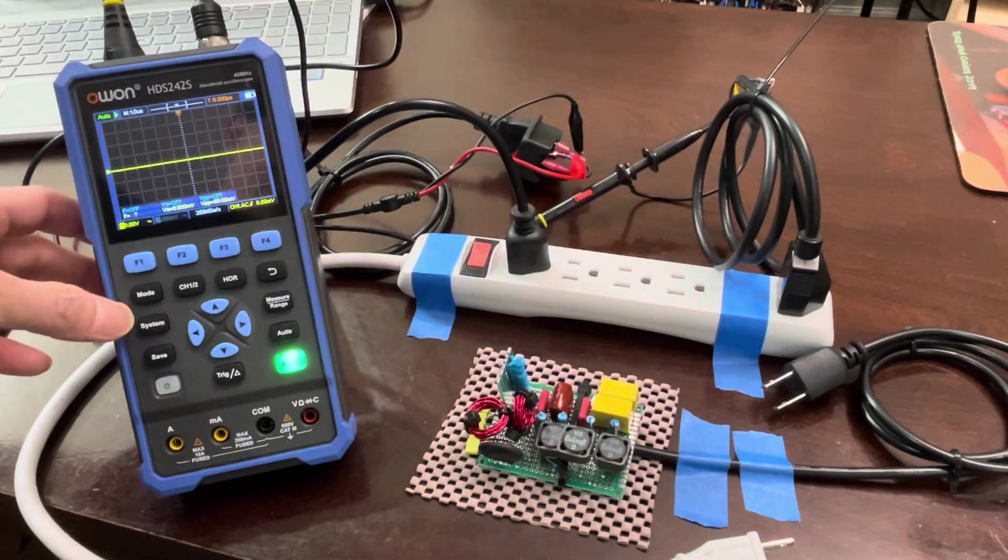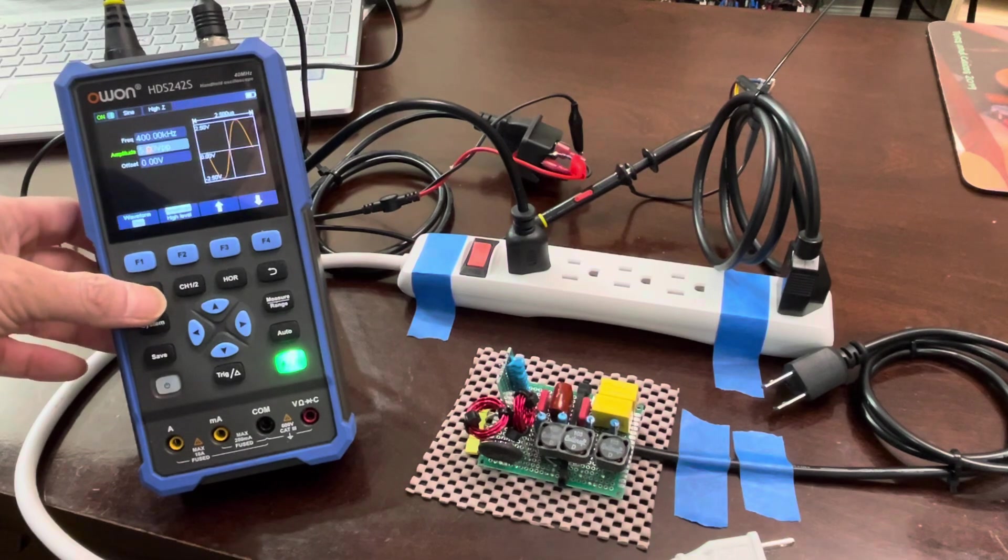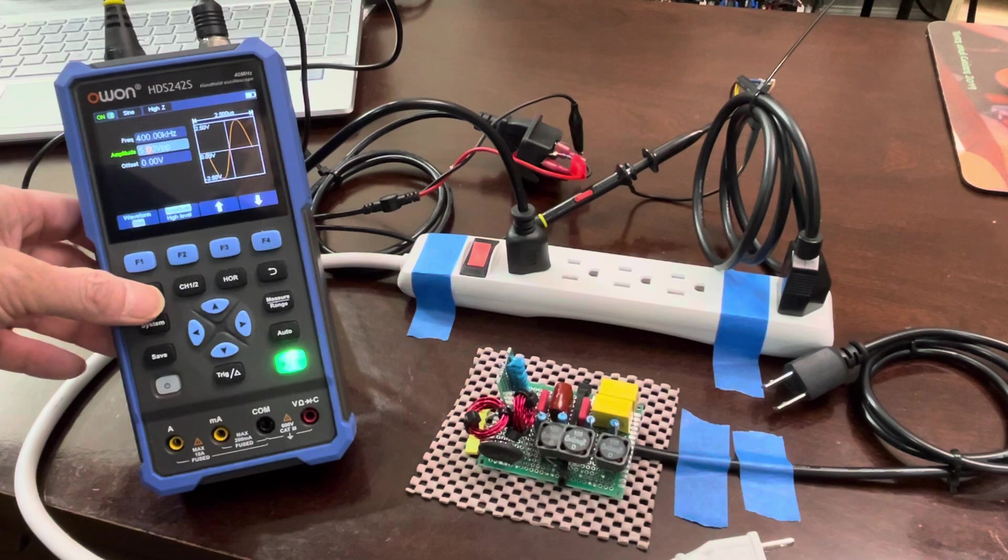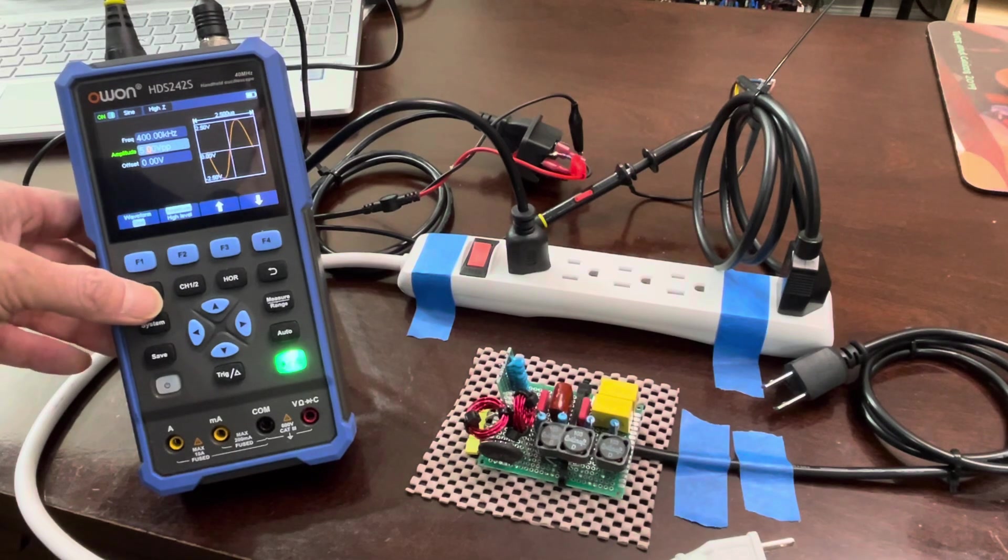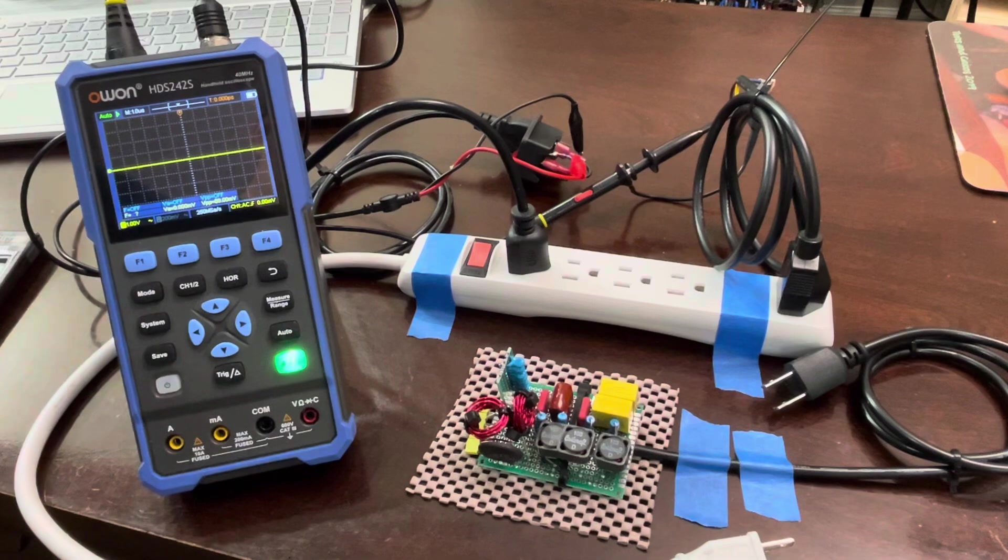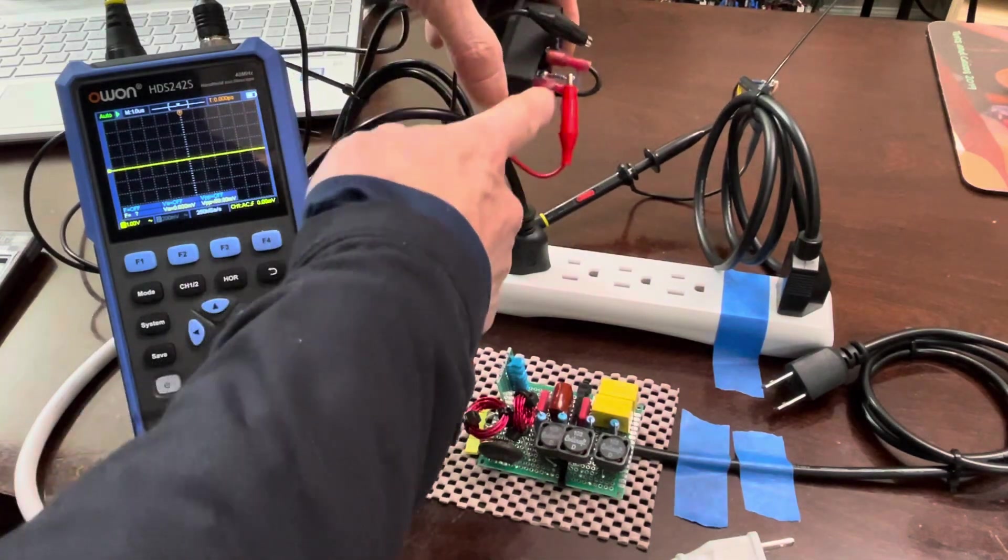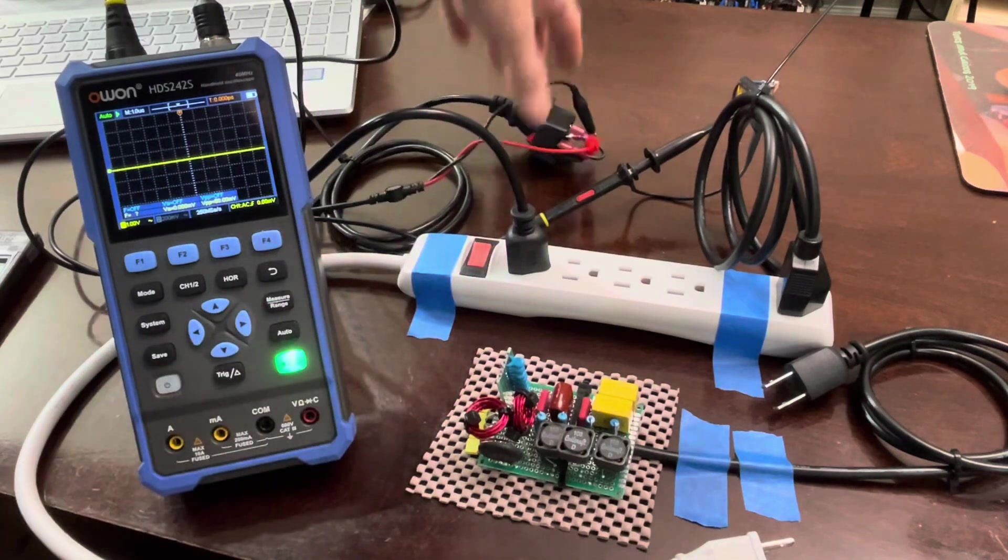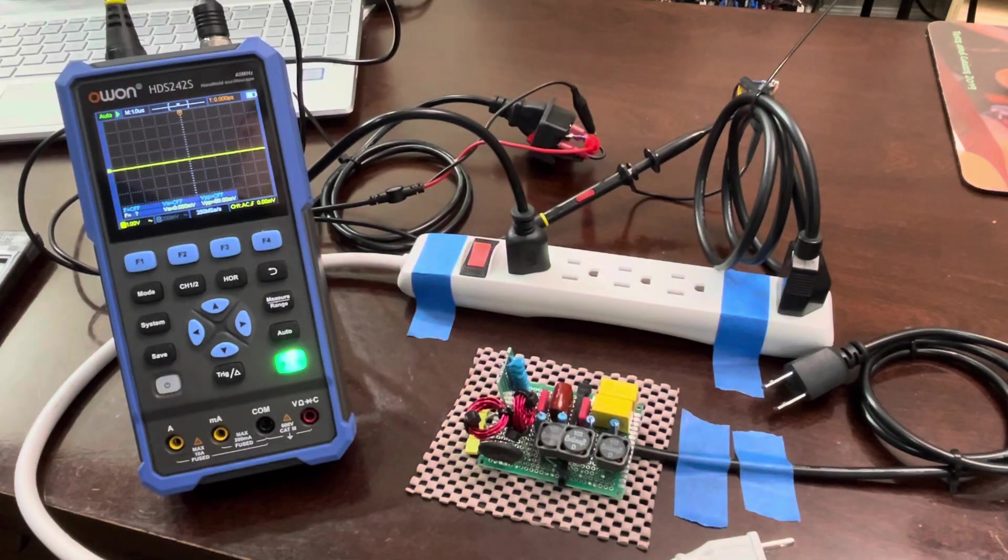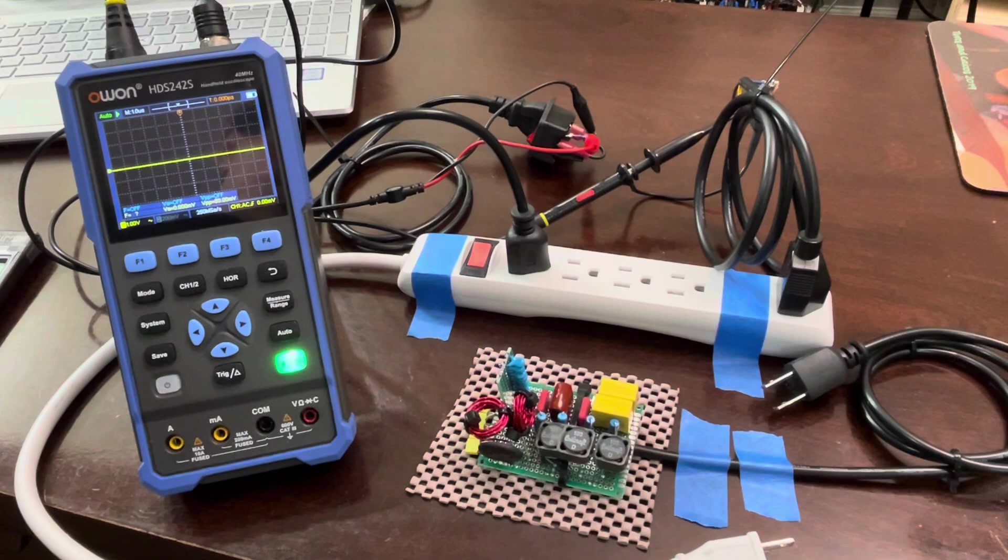Right now I have set up the function generator to put out 400 kilohertz, and it's putting about five volts peak to peak at the function generator. But by the time it goes through the one kilo ohm impedance resistor here - and I'll show you that it's just a simple resistor - it's going to be a little less.